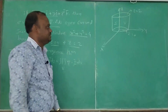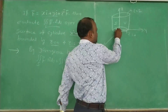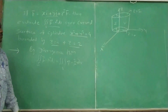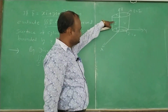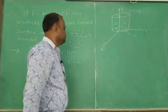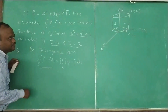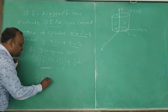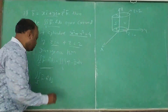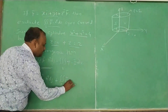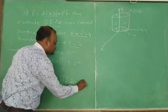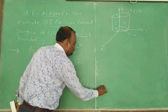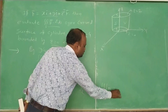Using the divergence theorem, there are 3 surfaces: the curved surface S, the lower disc S1, and the upper disc S2. So the double integral over S of f̄·n̂ dS plus the integral over S1 plus the integral over S2 equals the triple integral over V of ∇·f̄ dV.